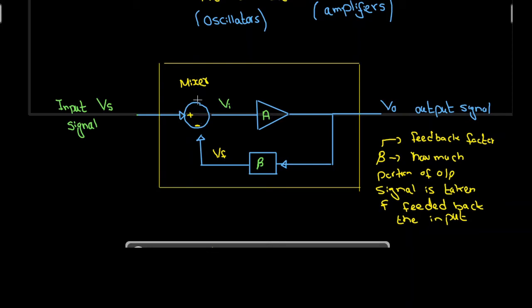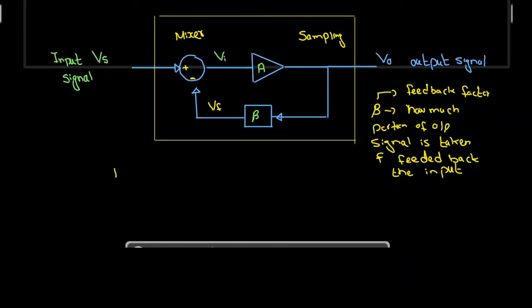We have the feedback factor, the amplifier, and a mixer. At the input side we have mixing, and at the output side we have sampling — we take a part of the output and apply it back through the feedback network to the input. So we have sampling at the output and mixing at the input.